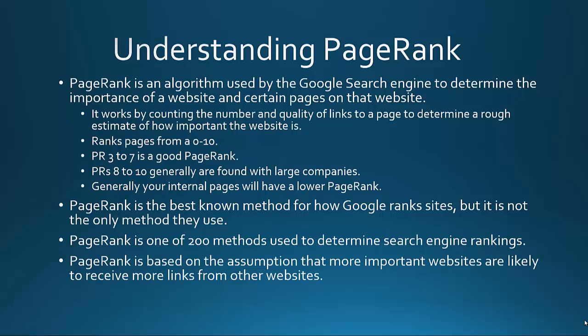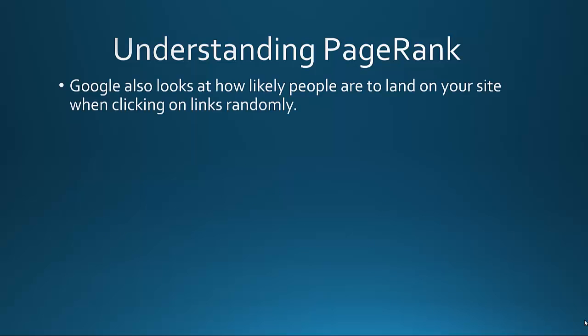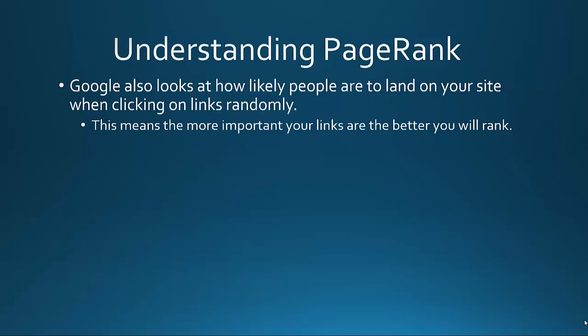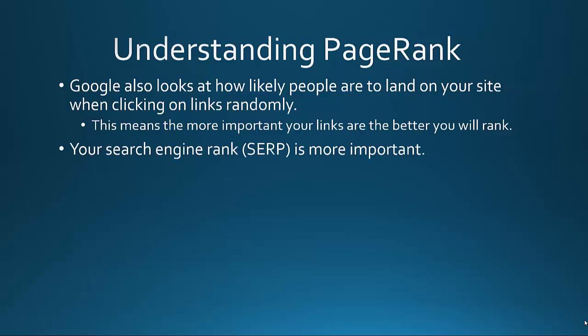PageRank is based on the assumption that more important websites are likely to receive more links from other websites, and those links count as votes. This makes link building from quality websites important. Google also looks at how likely people are to land on your site when clicking on links randomly, meaning the more important your links are, the better you will rank.